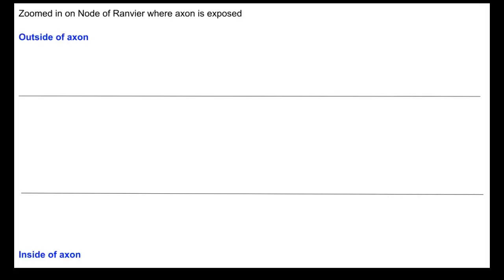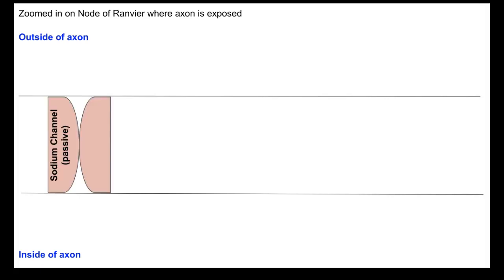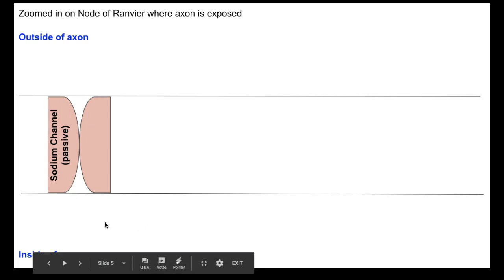Just like any other cell membrane, it would be a phospholipid bilayer. I'm not going to worry about drawing the phospholipid bilayer because the diagram will get really complicated. I'm just going to draw some of the membrane proteins that allow ions in and out of the cell. The first one we have is a channel that allows sodium into the axon — I have 'passive' written because passive requires no energy. It's going to be using a concentration gradient, so if there's a whole bunch of sodium on this side of the axon, it will naturally want to flow in.